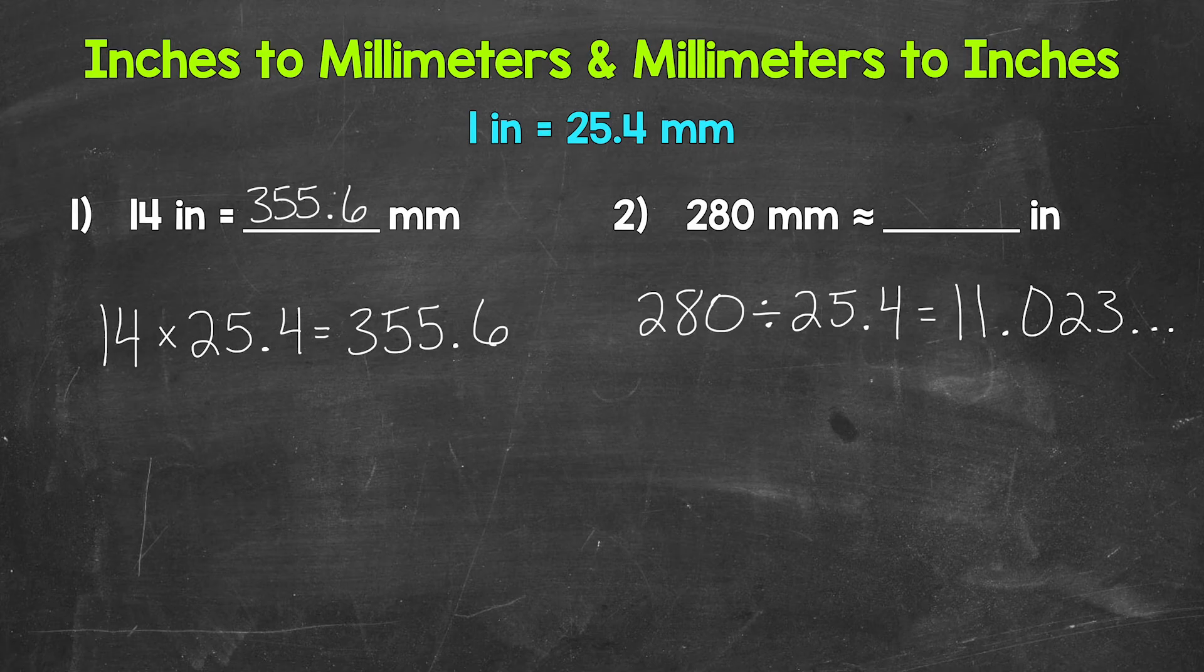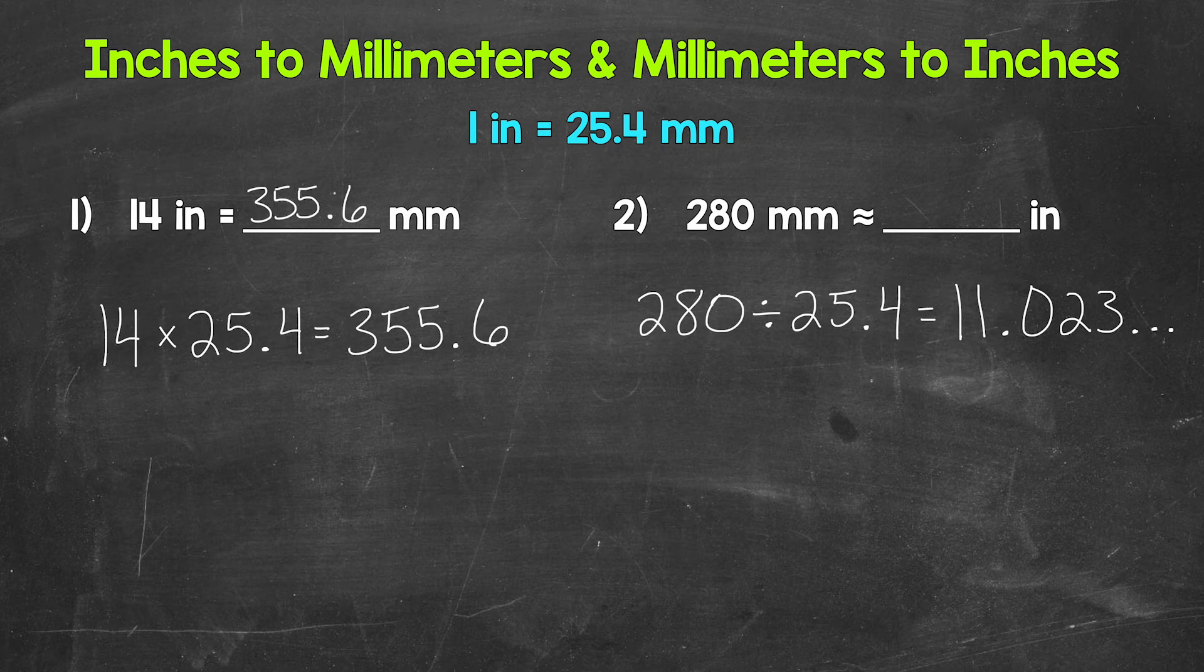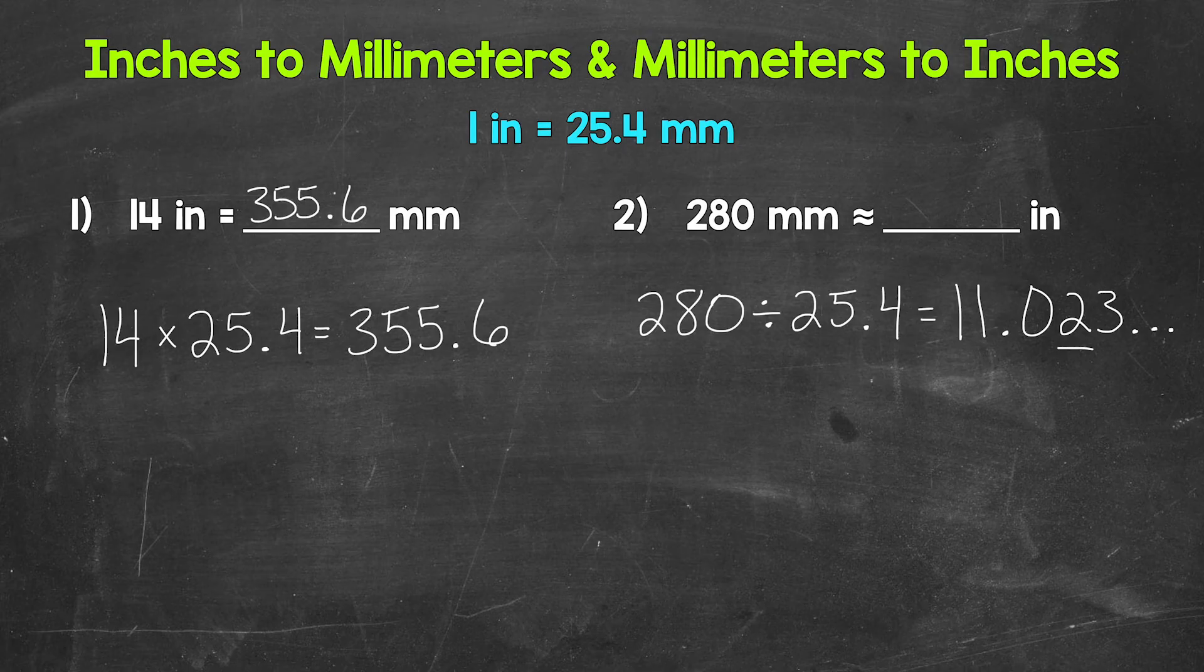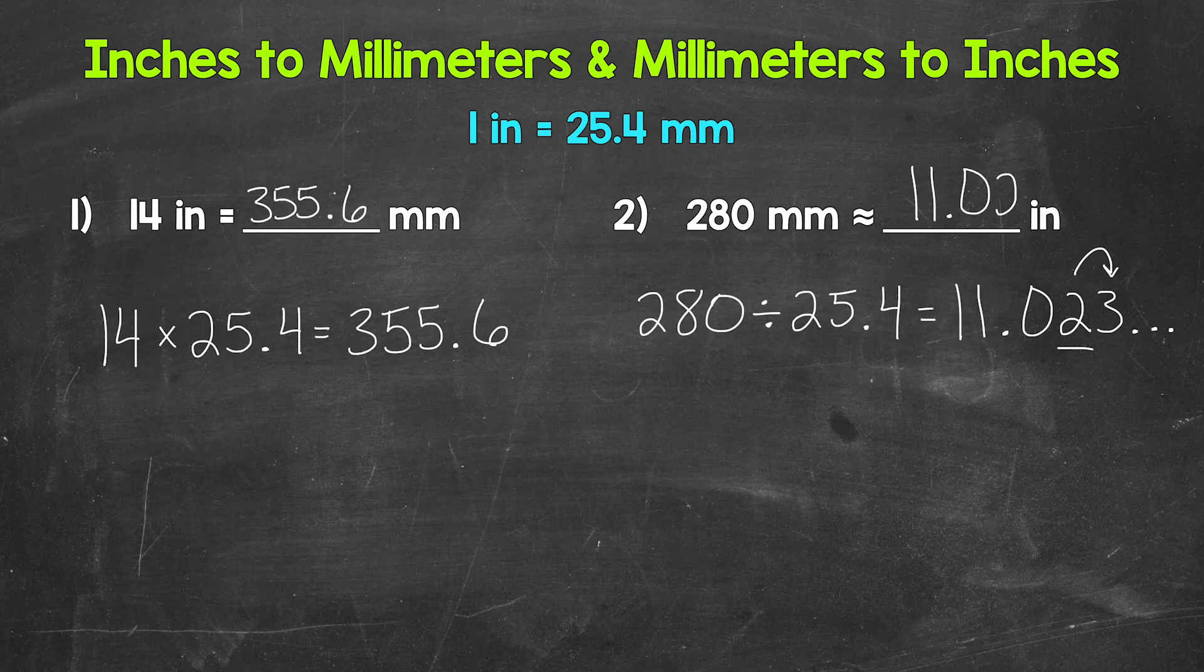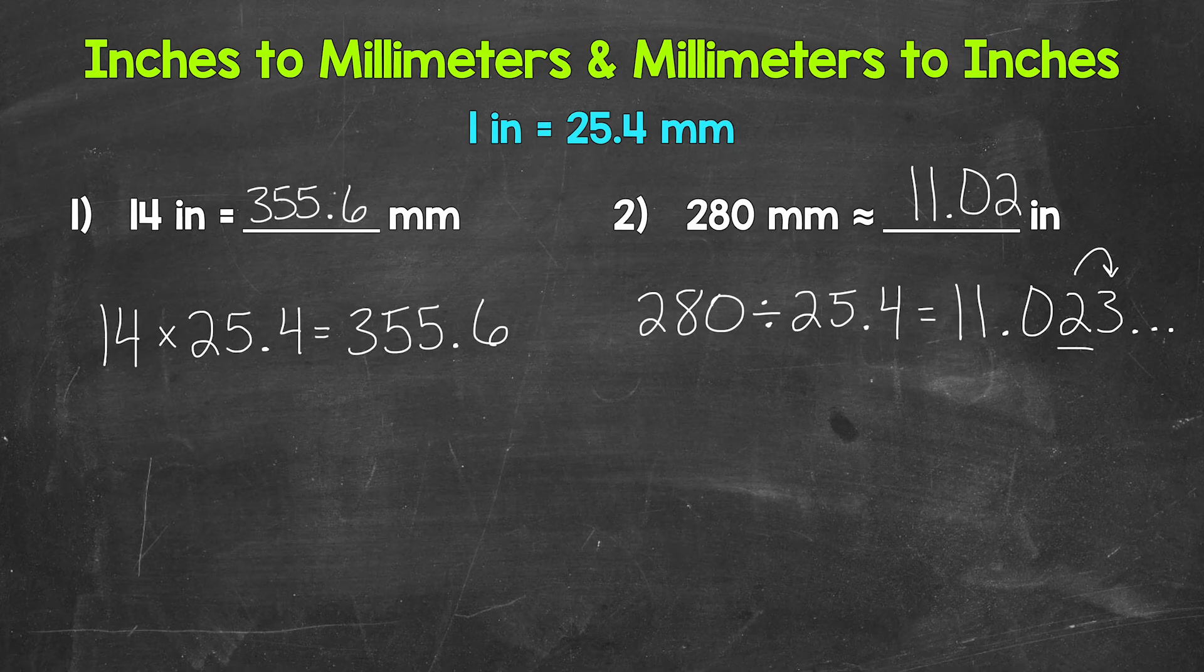And that decimal continues on, so I'm going to cut it off after the thousandths place and round to the hundredths. We have a two in the hundredths with a three in the thousandths, so this rounds to 11.02. So 280 millimeters is approximately 11.02 inches. We have an approximately sign there instead of an equal sign because we rounded, so that's not exact.